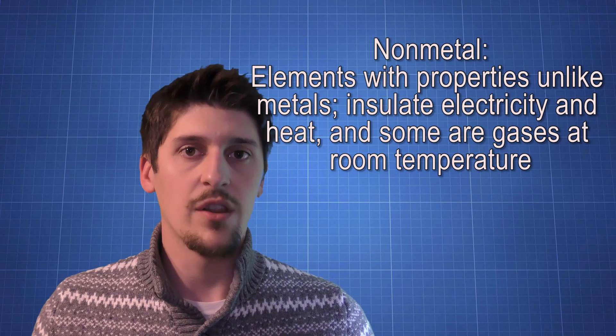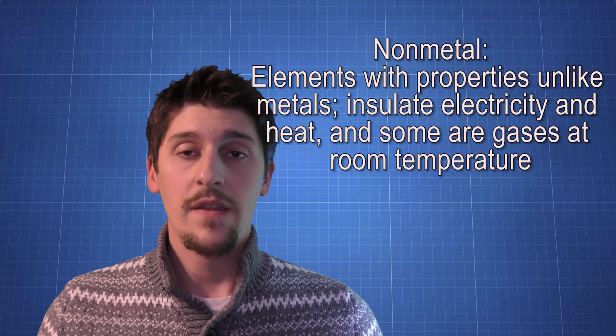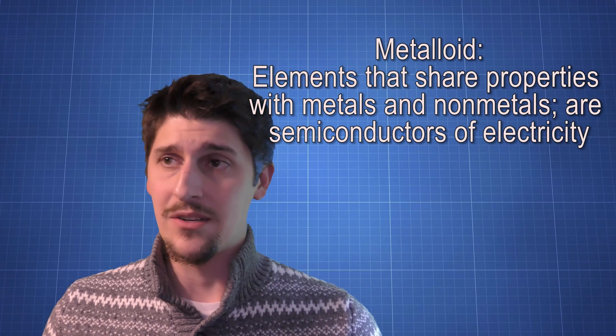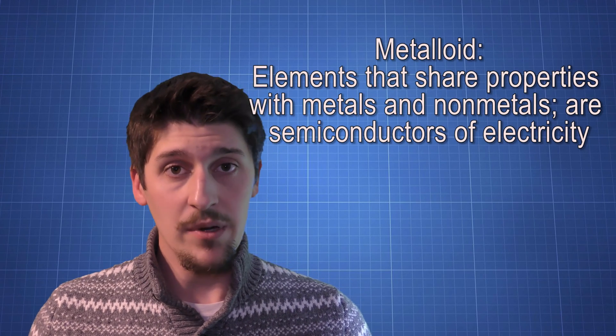Non-metals live on the right side of the periodic table. They tend to be a gas at room temperature and like to bond with metals or other non-metals. Metalloids are metal-ish, having some properties of metals and some of non-metals. For instance, they're not very good conductors of electricity but still allow electricity to flow.